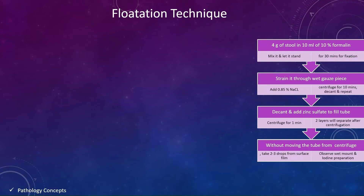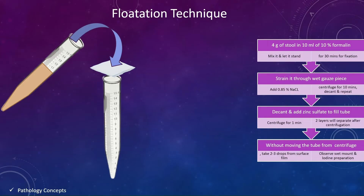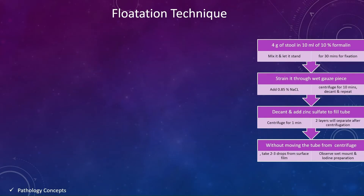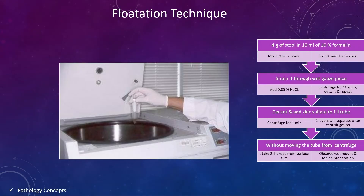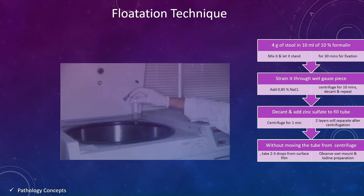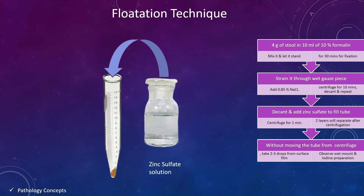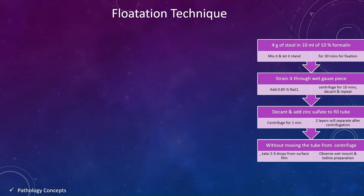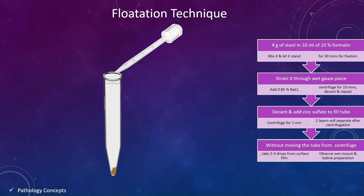Let it stand for 30 minutes, then strain it through a wet gauze piece and add 0.85% NaCl. Centrifuge it for 10 minutes, then decant and repeat. After decanting, add zinc sulfate to fill the tube and centrifuge for 1 minute.